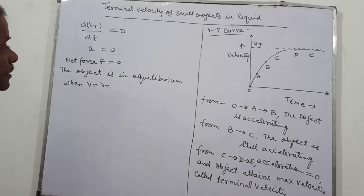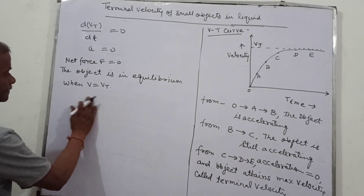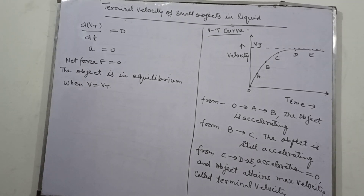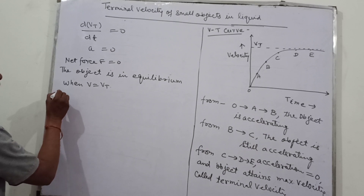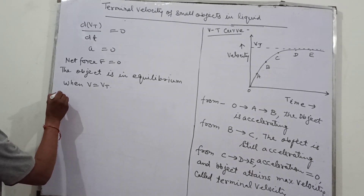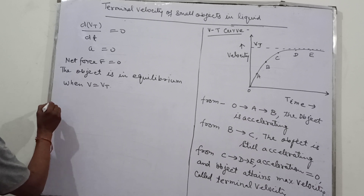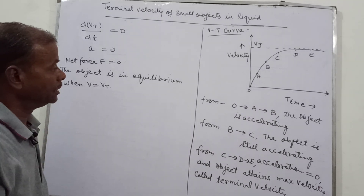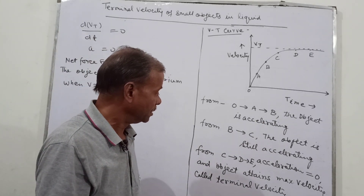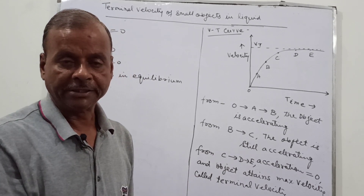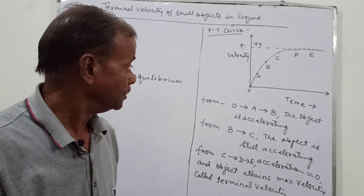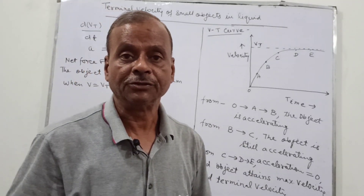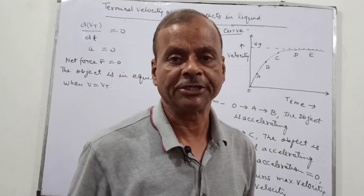This shows the variation of velocity with time and explains how terminal velocity is the maximum velocity for a body falling vertically downward in a liquid medium. We will next discuss which factors the terminal velocity depends upon. Thank you very much.